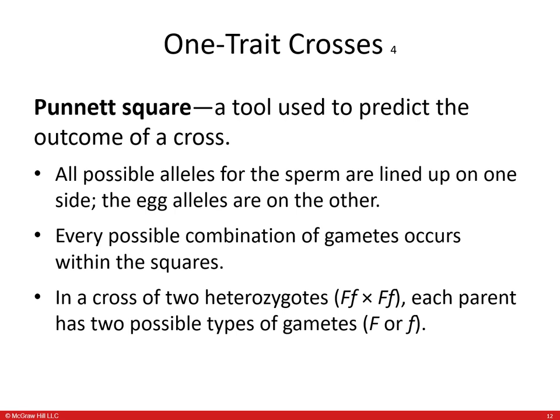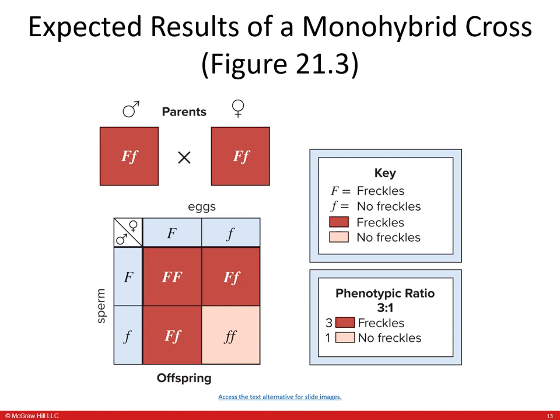To determine the probabilities of a couple having offspring with a particular trait, we use a Punnett square. In a Punnett square, we use all the possible alleles from the egg and sperm, and every possible combination of gametes occurs within the squares. In a cross between two heterozygous parents — both uppercase F lowercase f — each parent has two possible types of gametes: uppercase F or lowercase f.